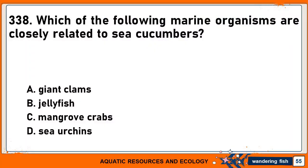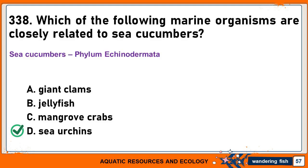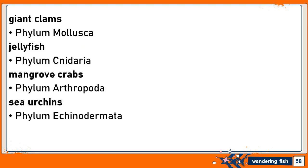Which of the following marine organisms are closely related to sea cucumbers? A. Giant Clams. B. Jellyfish. C. Mangrove Crabs. Or D. Sea Urchins. The correct answer is D. Sea Urchins. Sea cucumbers are under the Phylum Echinodermata. Giant Clams are under the Phylum Mollusca. Jellyfish are under the Phylum Cnidaria. Mangrove Crabs are under the Phylum Arthropoda. Sea Urchins are also under the Phylum Echinodermata.